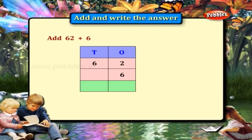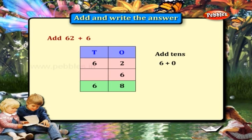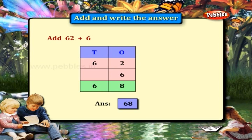62 plus 6. Add the 1's place: 2 plus 6 is equal to 8. Add the 10's place: 6 plus 0 is equal to 6. Answer: 68.